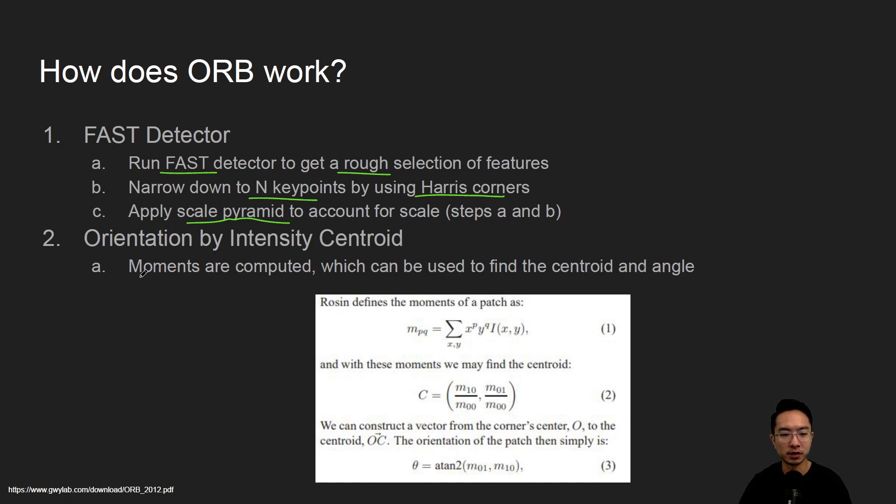So you want to compute the moments of your area that you're looking at and find the centroid and angle of that area. The moment here is defined by the product of X, Y, and your intensity values over the X and Y directions.